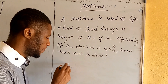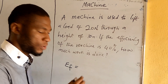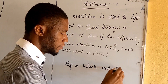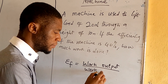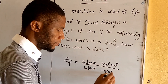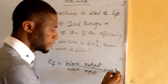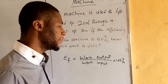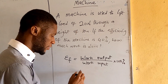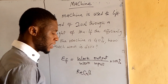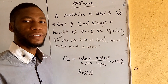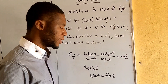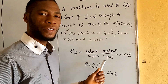We know that efficiency is equal to work output over work input, times 100%. We also recall that work is equal to force times distance. So basically we are looking for the work input.